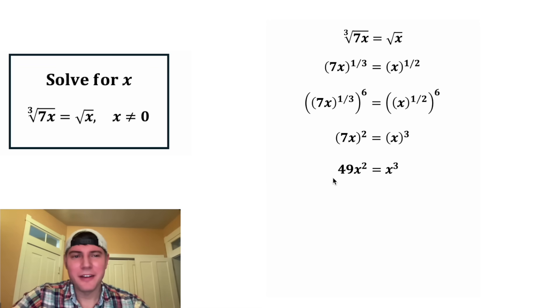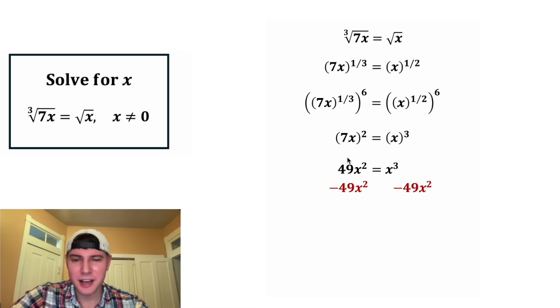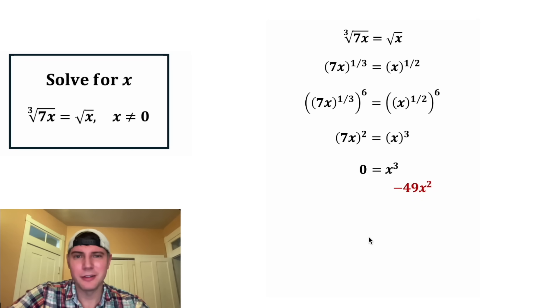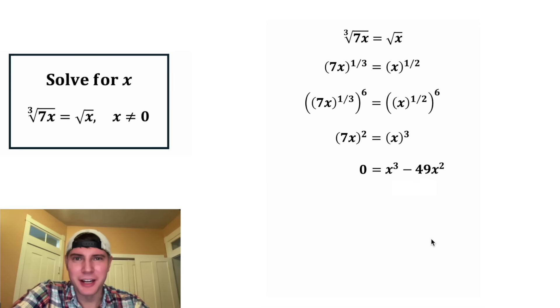And now 7 squared is equal to 49. Let's set everything equal to zero. We're going to subtract 49x squared from both sides. On the left hand side, these will cancel each other out, so we're left with zero. And on the right hand side, we have x cubed minus 49x squared.